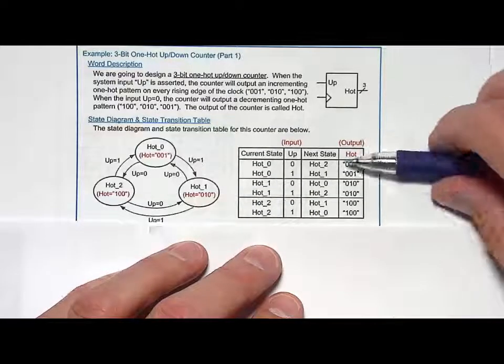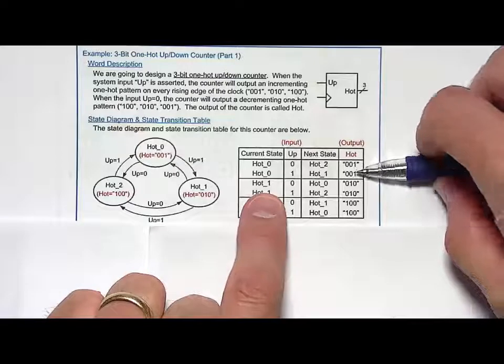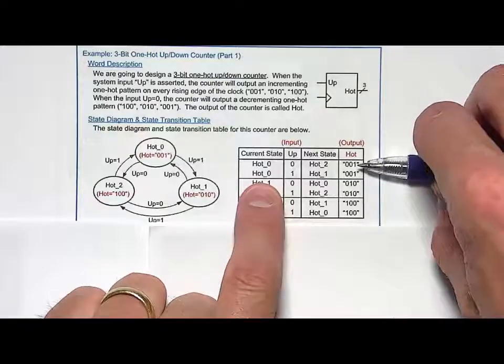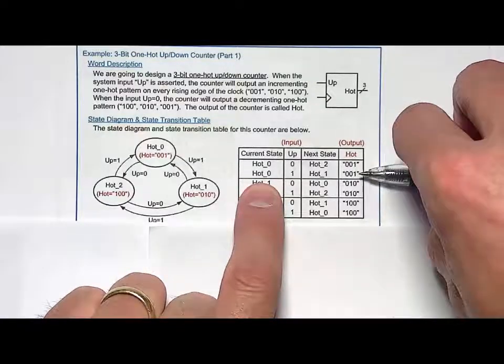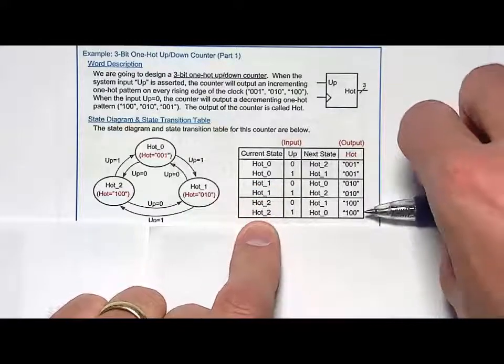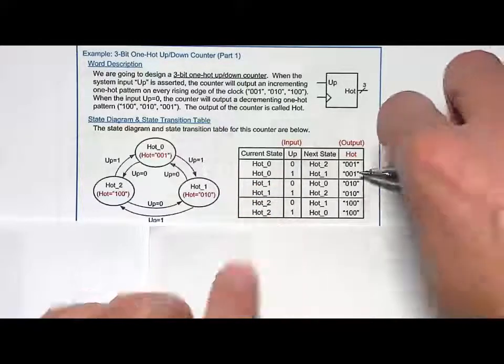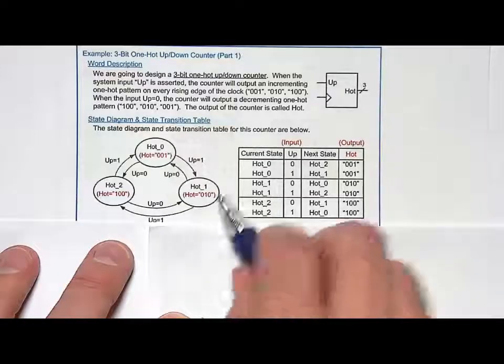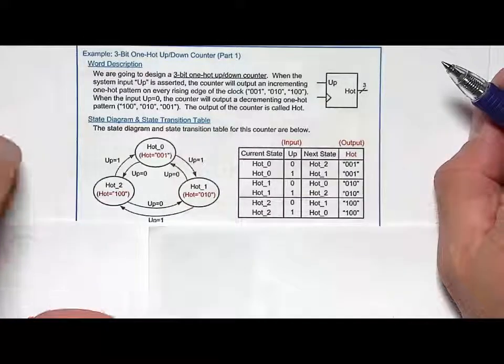Notice that the output is only dependent on the current state. So notice that for hot zero, it's always 001. For hot one, it's always 010. For hot two, it's 100. And that's a Moore type machine, and that's why I wrote the output values within the state circle.